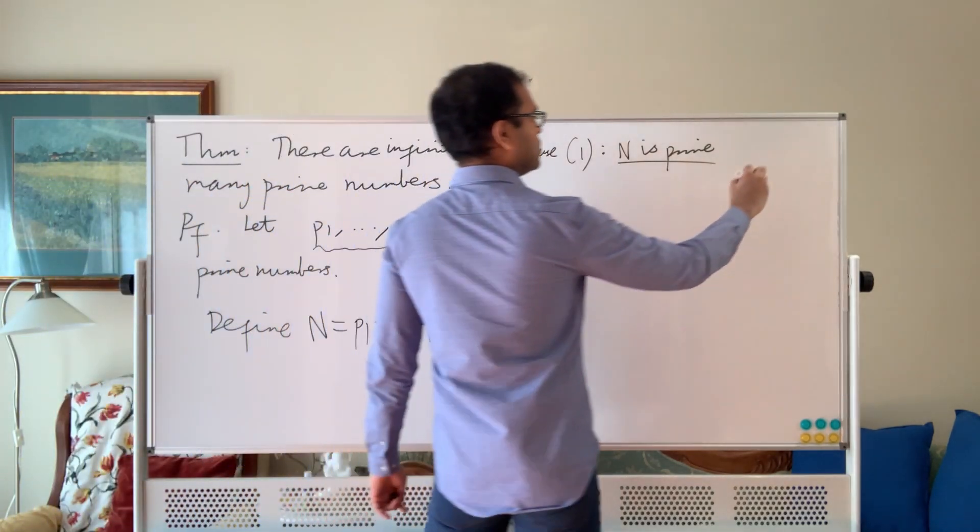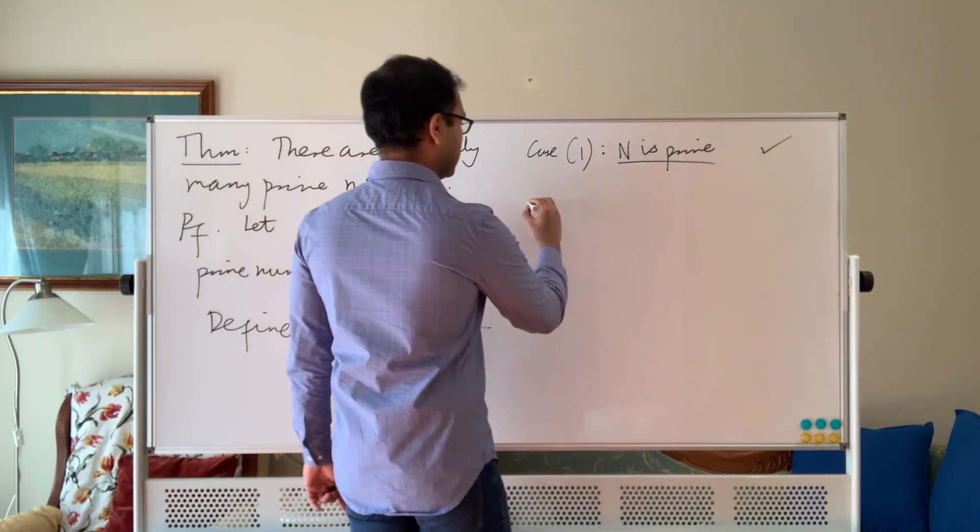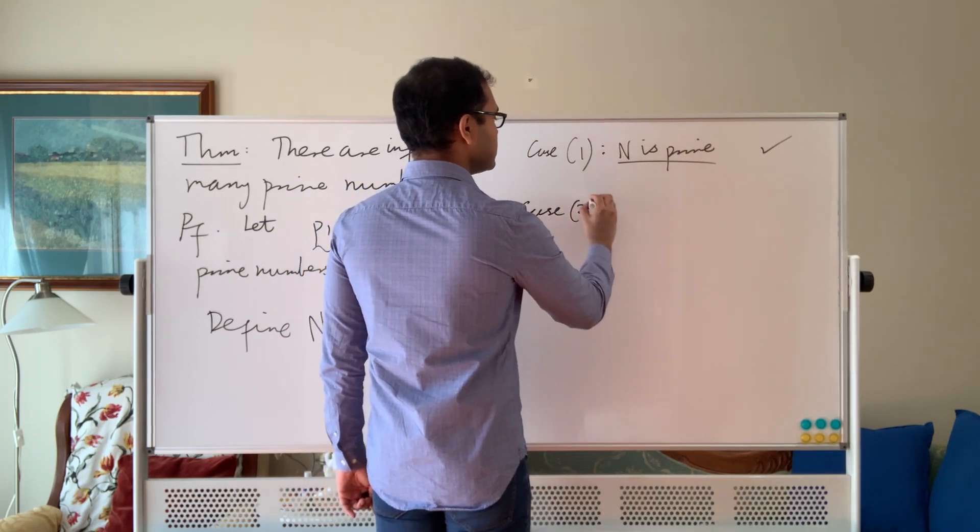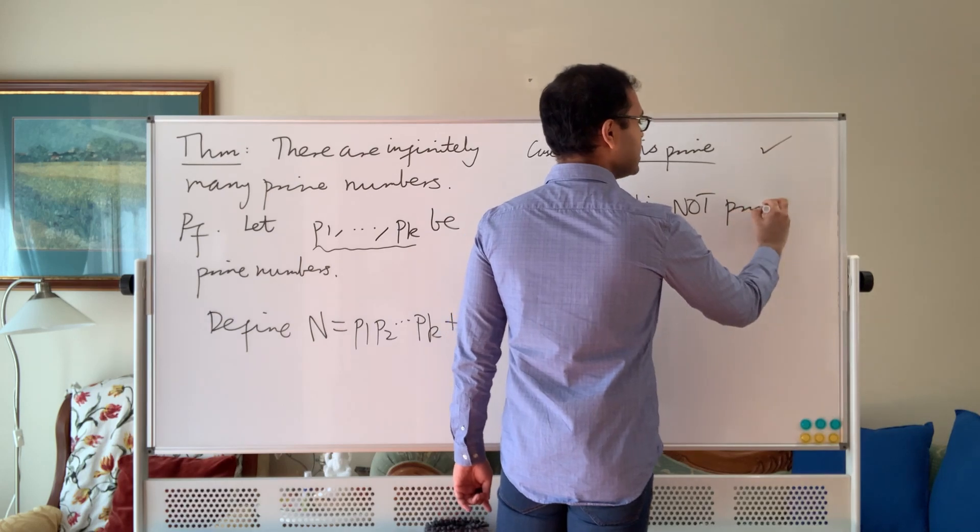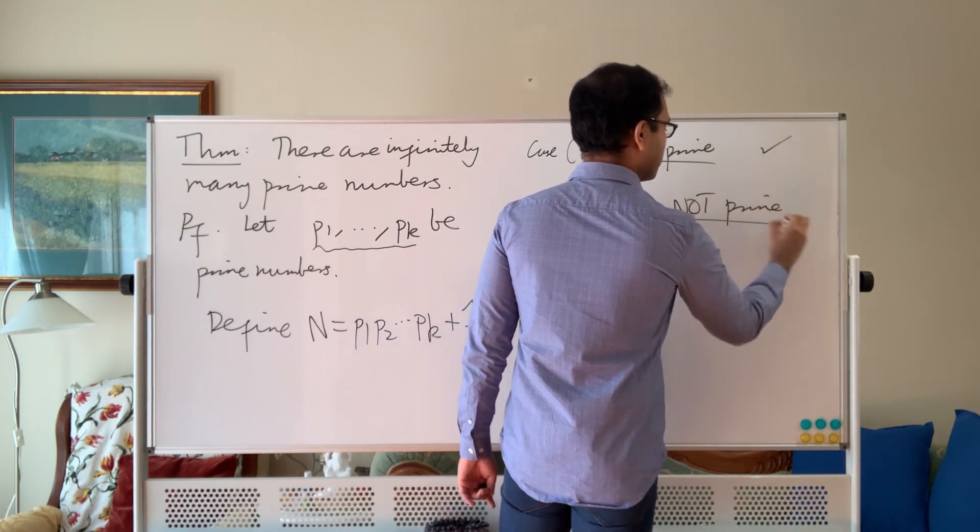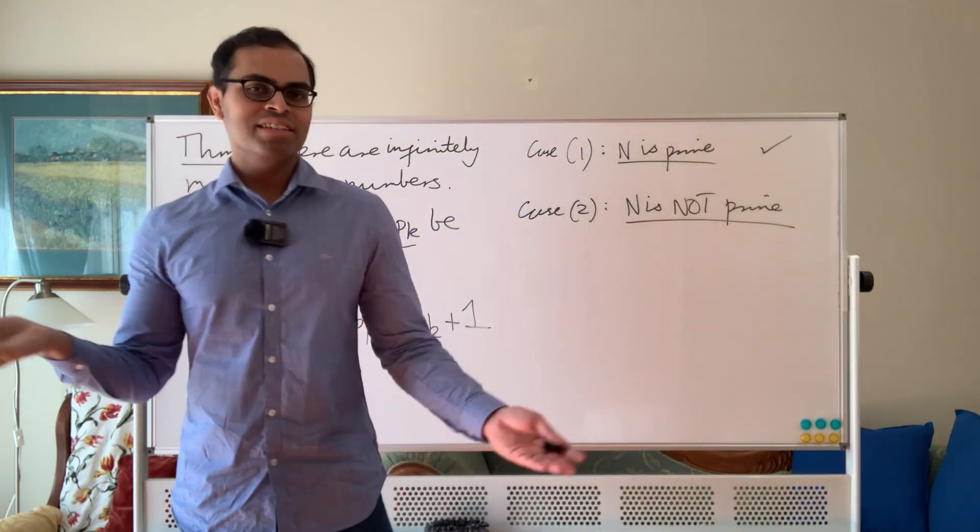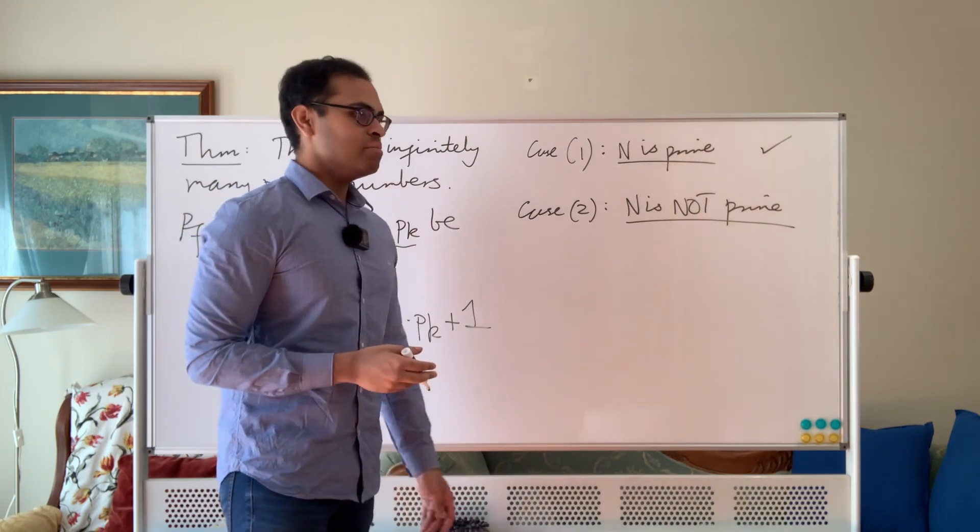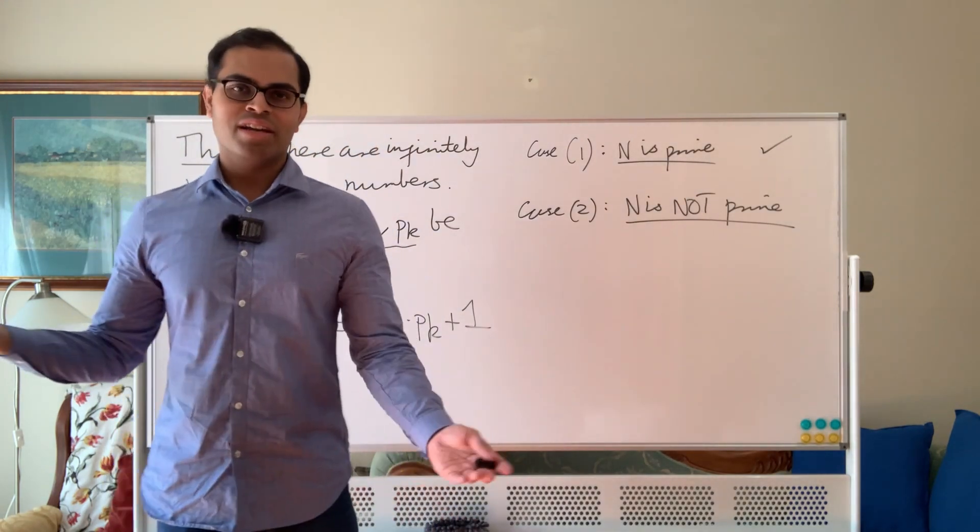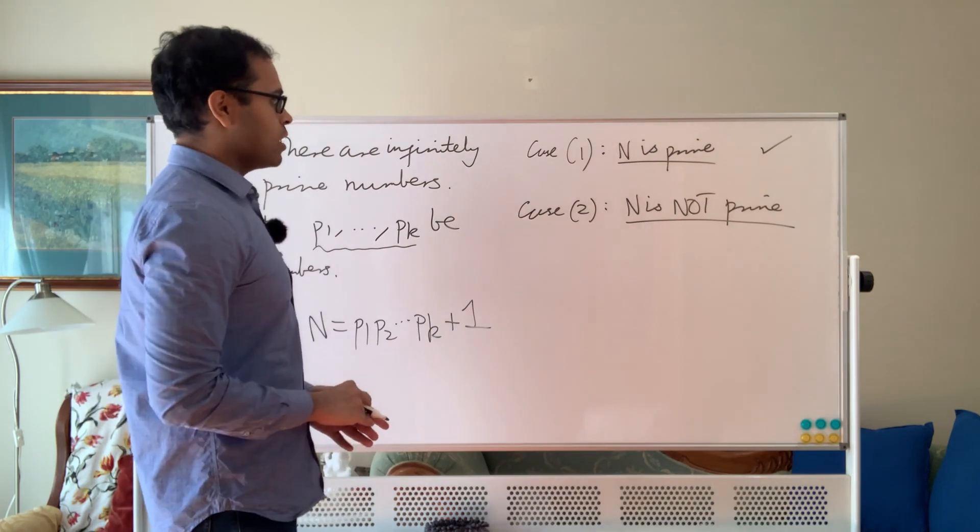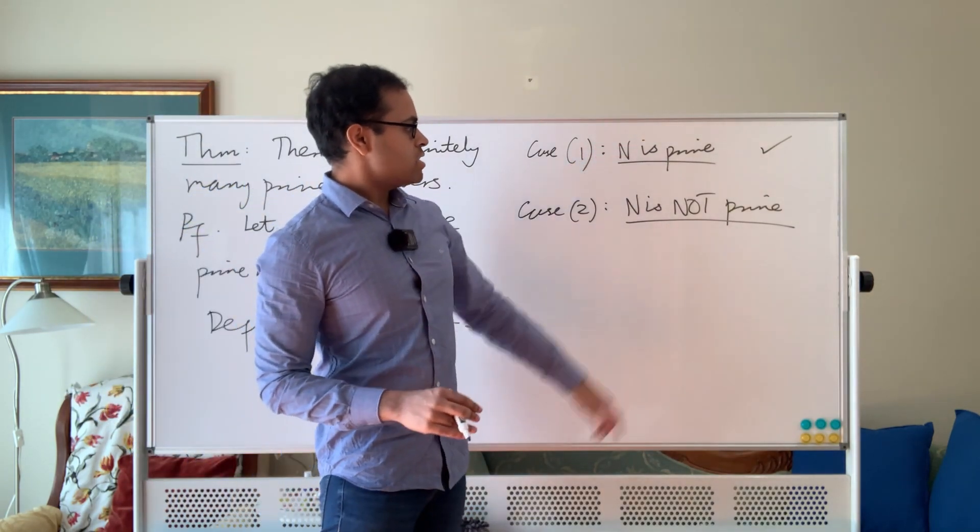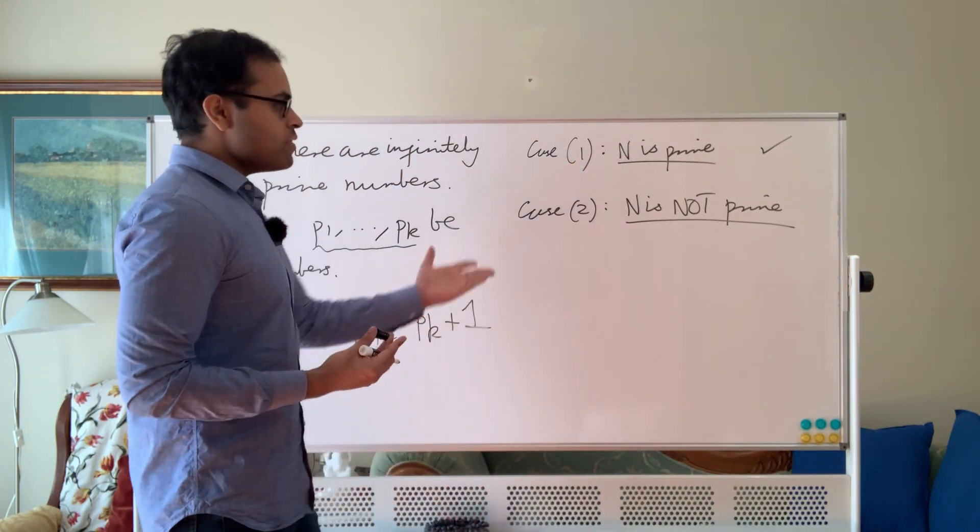So that case is ticked. We've created a prime that's not in the list. Case 2 is N is not prime. It's either one or the other, right? Either N is prime or N is not prime. It can't be either—something's a cow or it's not a cow. So an animal is either a cow or it's not a cow.